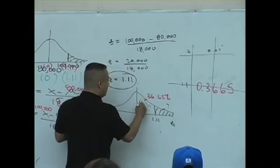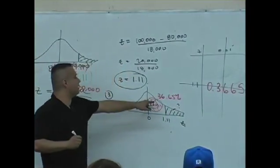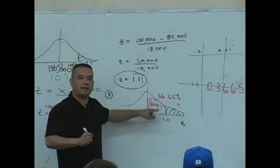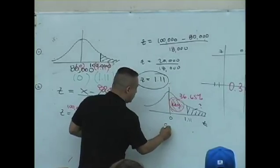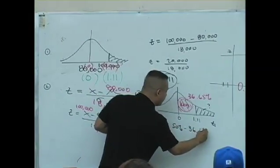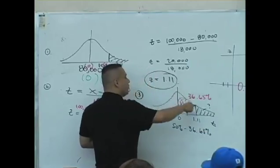Why is this the key to the problem? Because 50% minus 36.65% is what's in your right tail.